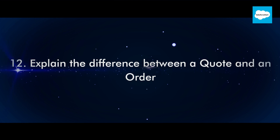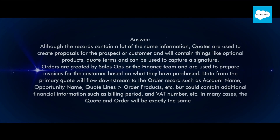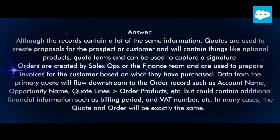Question 12: Explain the difference between a quote and an order. Although the records contain a lot of the same information, quotes are used to create proposals for the prospect or customer and will contain things like optional products, quote terms, and can be used to capture a signature. Orders are created by sales ops or the finance team and are used to prepare invoices for the customer based on what they have purchased. Data from the primary quote will flow downstream to the order record such as account name, opportunity name, quote lines, order products, etc., but could contain additional financial information such as billing period and VAT number. In many cases, the quote and order will be exactly the same.